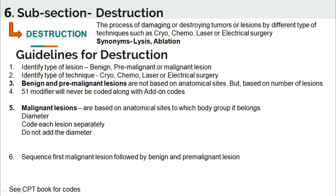There are guidelines the coder needs to follow for the destruction section. The coder has to identify the type of lesion — whether benign, pre-malignant, or malignant — and identify the technique used: cryo surgery, chemo surgery, laser surgery, or electrical surgery. For benign or pre-malignant lesions, codes are not based on anatomical site but on number of lesions.